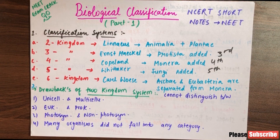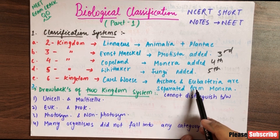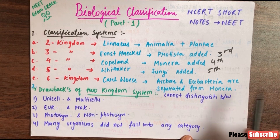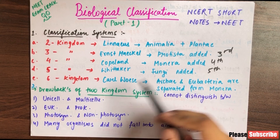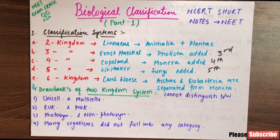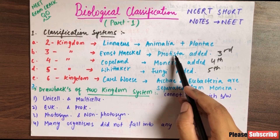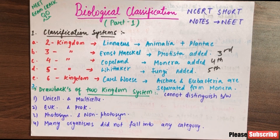The 5-kingdom classification was given by R.H. Whittaker. The 6-kingdom system was given by Carl Woese. In the 6-kingdom system, no new kingdom was added. Instead, Monera was split into two: Archaebacteria and Eubacteria. So the six kingdoms are: Plantae, Animalia, Protista, Fungi, Archaea, and Eubacteria.